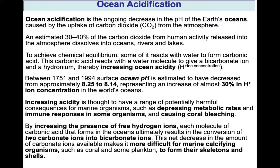Nearly 30–40% of carbon dioxide released in the atmosphere comes from human activities. When carbon dioxide is introduced to ocean water in excessive amounts, it forms carbonic acid, H₂CO₃, which reacts with water molecules to produce a bicarbonate ion and a hydronium ion. Collectively, the increased bicarbonate and hydronium in seawater increase ocean acidity. From 1751 to 1994, surface ocean pH is estimated to have decreased from approximately 8.25 to 8.14 — those two decimal points represent an increase of almost 30% in hydronium ion concentration in the world's ocean system.